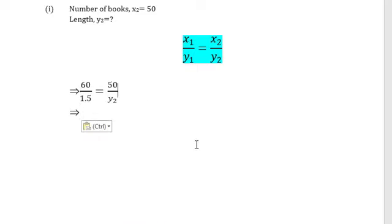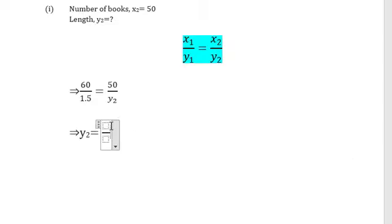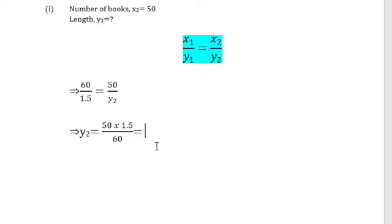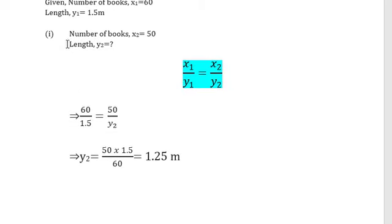Now solve the equation using cross multiplication. y2 equals 50 multiplied by 1.5, divided by 60. If you calculate using your calculator, 50 multiplied by 1.5 divided by 60 gives 1.25. The unit is meter because we are finding the length. So the length occupied by 50 books is 1.25 meter.